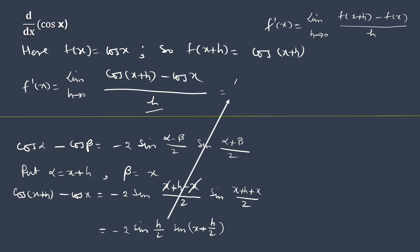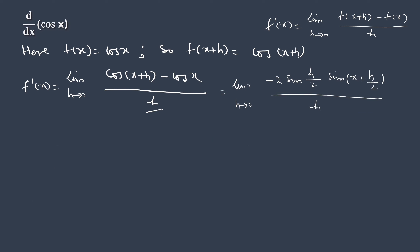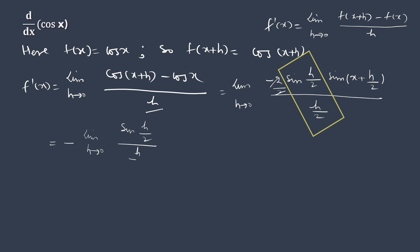Now substituting it in the formula. Since sine has angle h by 2, to have h by 2 in the denominator also, we can divide both the numerator and denominator by 2. Now we use the fact that the limit of a product of functions is equal to the product of their individual limits. So, after taking minus sine out, we can rearrange the limit as shown.